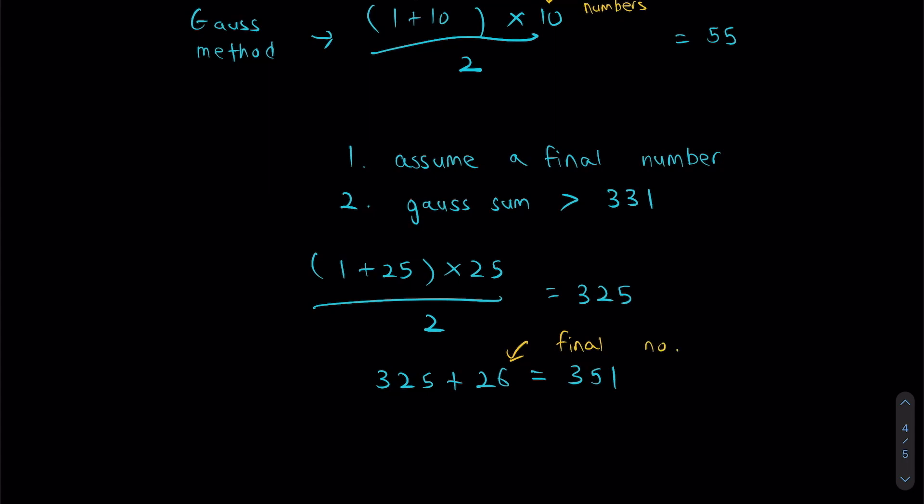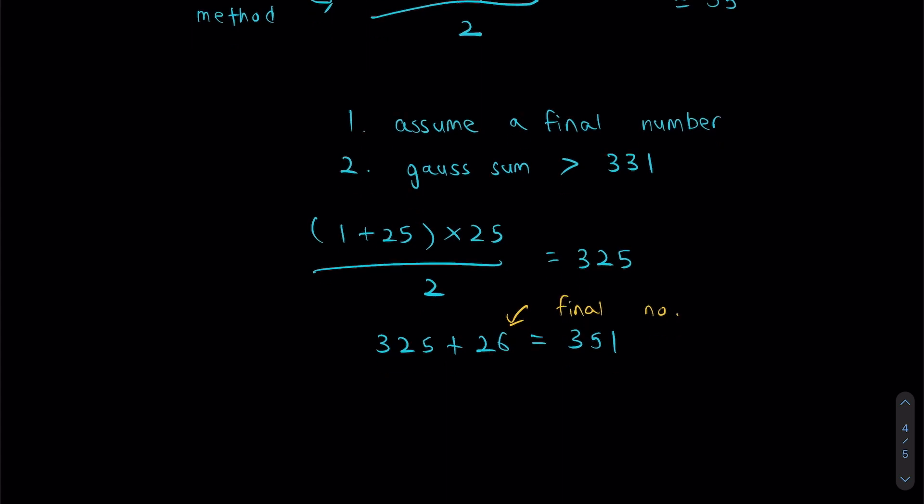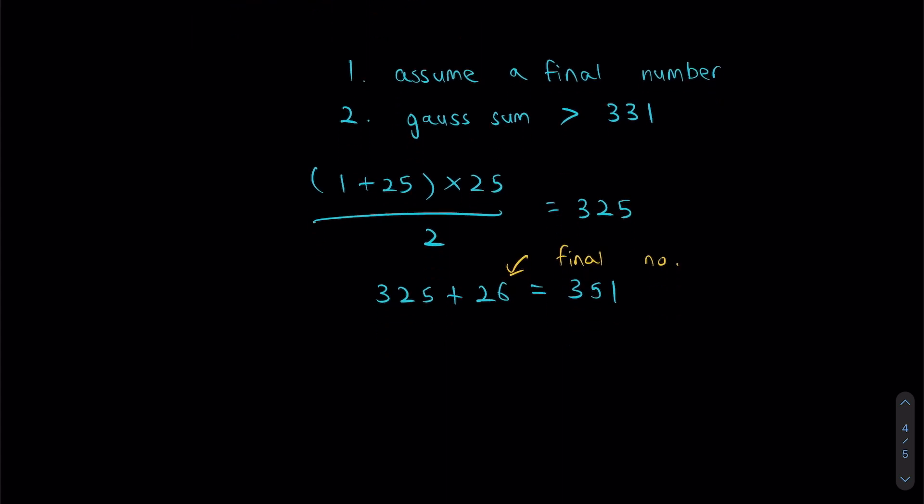And we can also know that the difference between 351 and 331 would be my missing number. Why is that? Because throughout the entire addition, Jack only forgot one number. Which means if you add that missing number to 331, you should get 351. So in order to find the missing number, all I have to do now is take 351 minus 331 and I'll get 20. Which means my missing number equals 20.